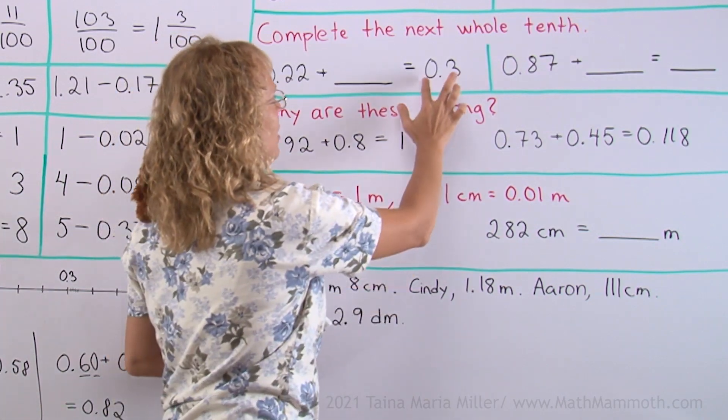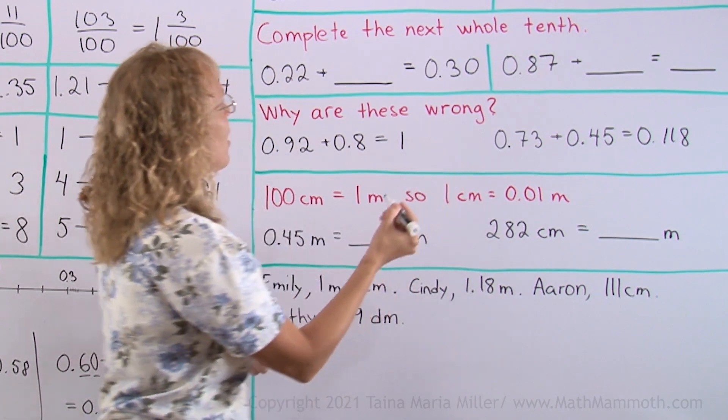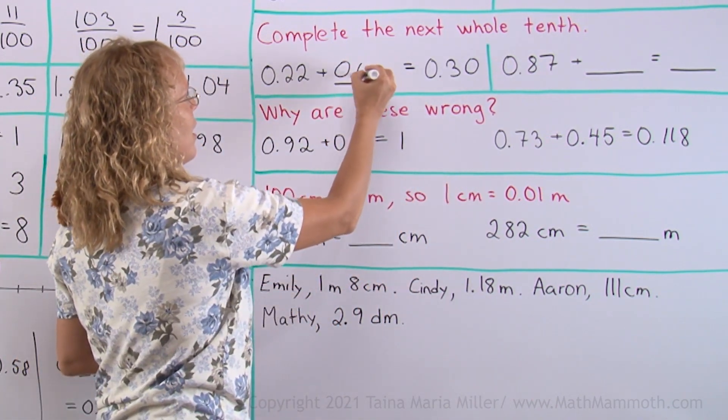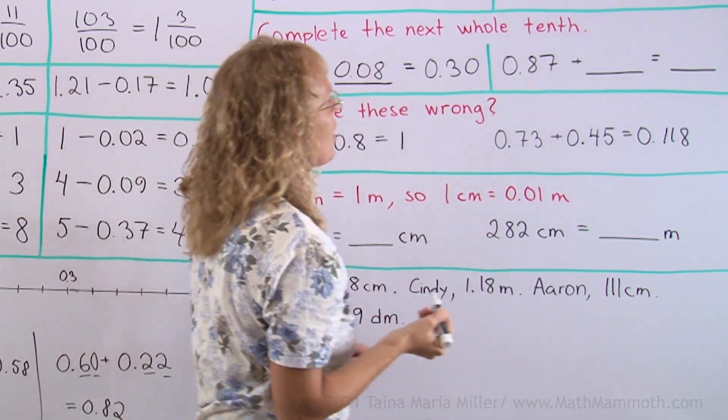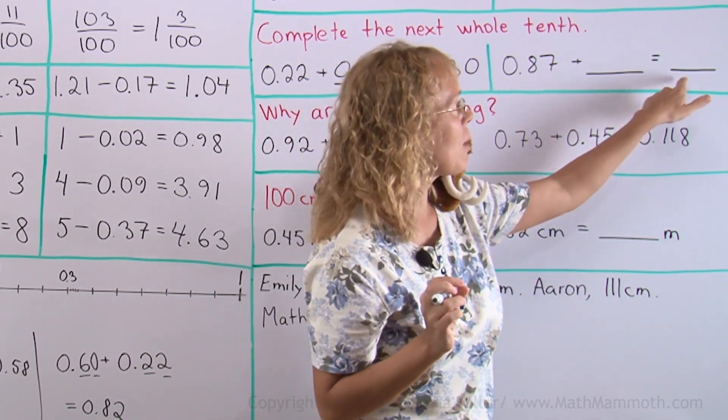But remember that 0.3 is the same as 30 hundredths. And so clearly, we just have to add 8 hundredths here. Now here, it is the same kind of problem, but we need to put a number here.